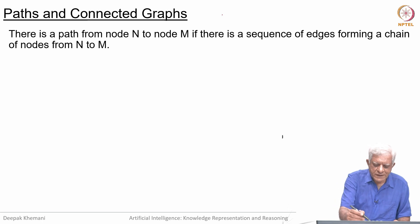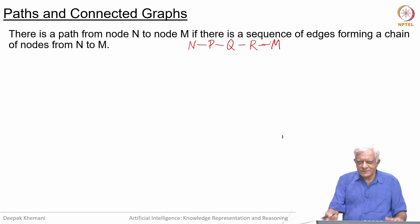You may have N edge to P, P edge to Q, Q edge to R and then R edge to M. If you have a sequence of such edges or a sequence of such nodes which are linked by edges, then we say that there is a path from N to M.